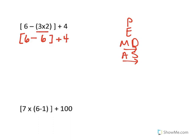Now it says six minus six plus four. Do I have any more parentheses? Yes, because those brackets are considered parentheses. So I'm going to do six minus six, which is zero, plus four. No more parentheses, no exponents, no multiplication or division. All I have left is addition, and zero plus four is four. So my answer is four.